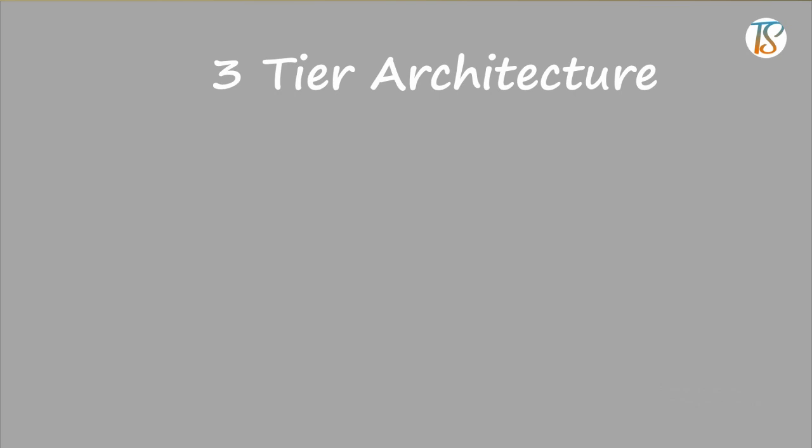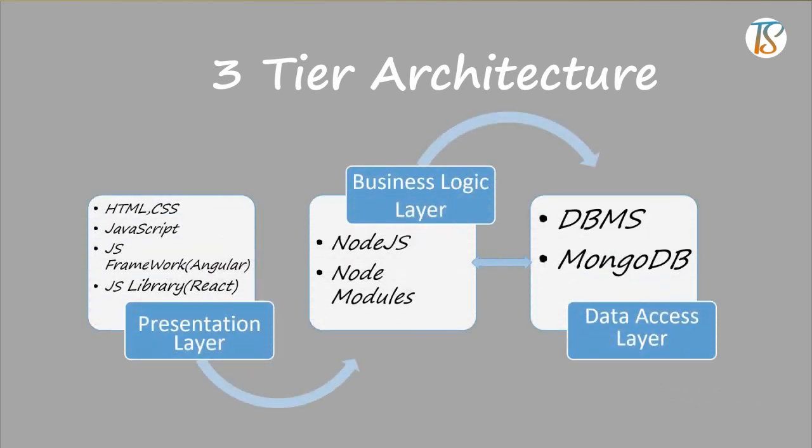We often hear people talking about 3-tier architecture for web development. In this approach, the entire web application is organized into 3 different layers: the presentational layer, the business logic layer, and the data access layer. The presentational layer is concerned with delivering information to the user — this is usually the UI-related concern. The business logic layer is concerned more about data and data validation, and it is backed up behind the scenes with the data persistence layer or data access layer.